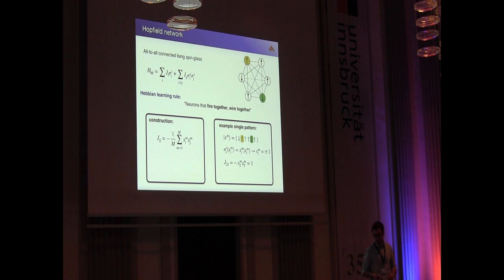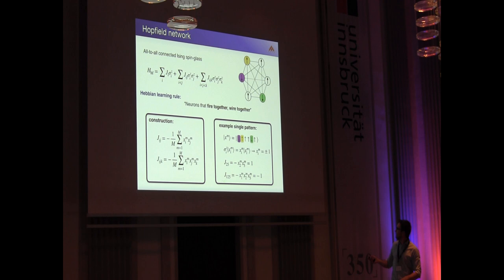This construction can be easily generalized to higher order terms. For example, if I want to include a three-party interaction, I can construct this matrix element really similar to before, which means that if I want to get this matrix element between 1, 2 and 5, I simply multiply these eigenvalues. And this can go on for arbitrary up to n local, but as I said before, we want to restrict ourselves to low-K local Hamiltonians.